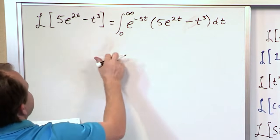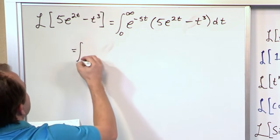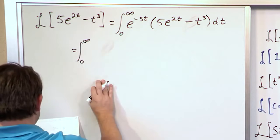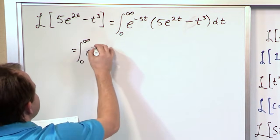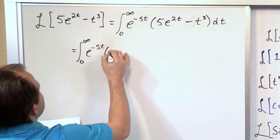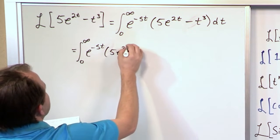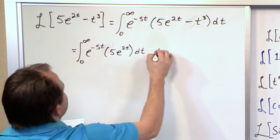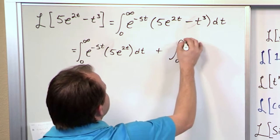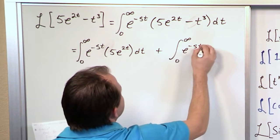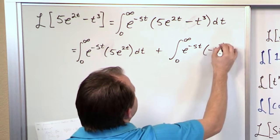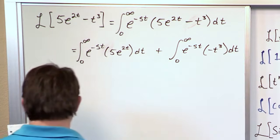And furthermore, I can rewrite this. Let me go to the left a little bit. I can rewrite this as integral 0 to infinity, e to the minus st, 5e to the 2t dt, plus another integral from 0 to infinity, e to the minus st, negative t cubed dt. Make sure you understand this.